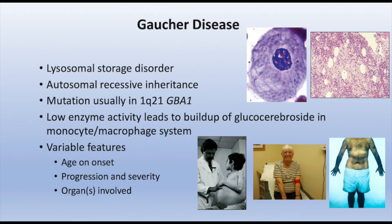The common characteristic between all Gaucher disease types is that low enzyme activity leads to a buildup of the primary substrate, glucocerebroside, predominantly in cells of the monocyte and macrophage system. The first picture is an illustration of a bone marrow aspiration showing the Gaucher cell — a large cell with a rather small nucleus relative to the cytoplasm, which is full of stored glucocerebroside.